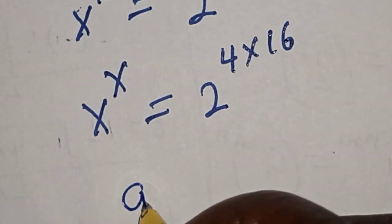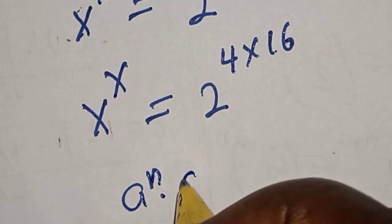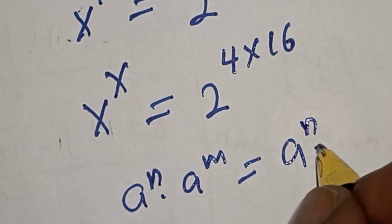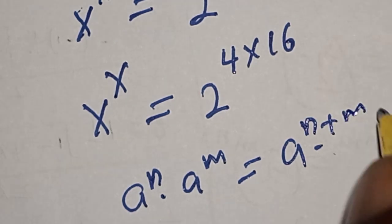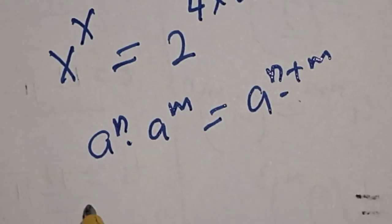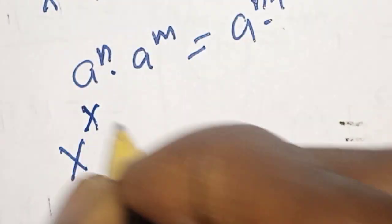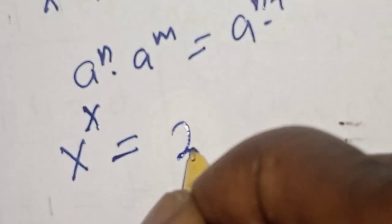If you have a raised to power n multiplied by a raised to power m, this equals a raised to power n plus m. Now this becomes s raised to power s equals 2 raised to power 4 raised to power 16.